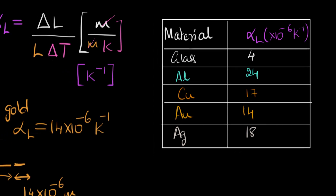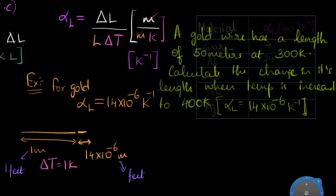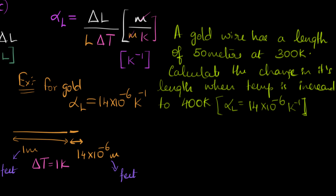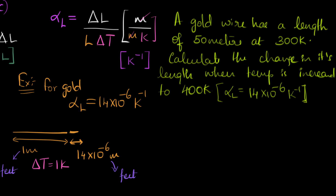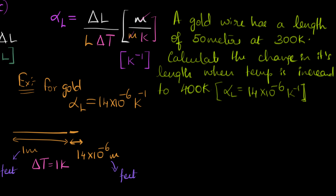Let's end with a numerical example. We have a gold wire with a length of 50 meters at 300 Kelvin. We need to calculate the change in its length when the temperature is increased to 400 Kelvin. The alpha L value for gold is given as 14 times 10 to the minus 6 Kelvin inverse.